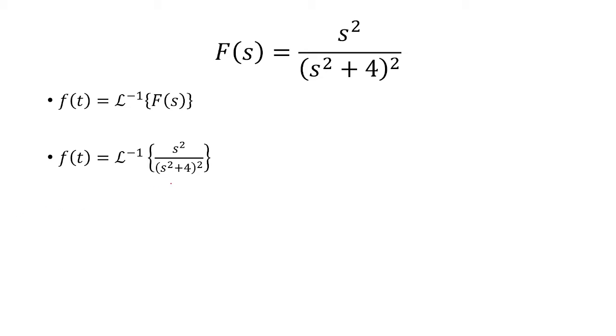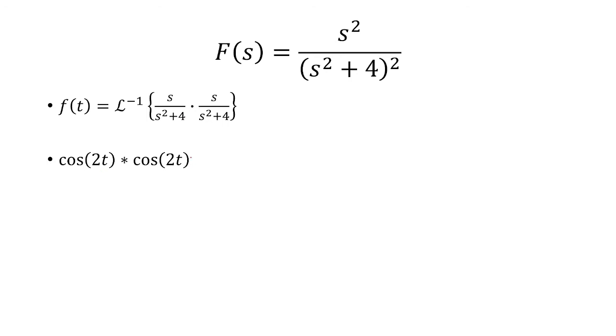I can factor out the square here and put it all under one parenthesis. And then if I square something, that means I multiply it by itself. Now, the inverse Laplace transform of s over s squared plus 4 is cosine of 2t. So this is just the convolution of cosine 2t with cosine 2t.